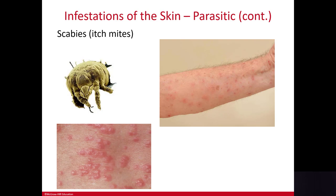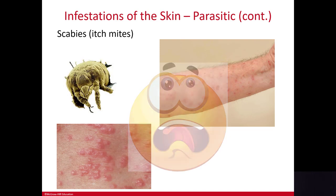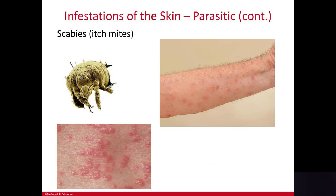Another parasitic infestation is scabies, sometimes called itch mites. Scabies are tiny burrowing mites that actually burrow under the skin and lay their eggs there. This causes intense itching, especially in skin folds like the waist, the groin, under the breasts, and in the armpits. You can see pictures of the rash here.